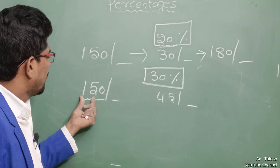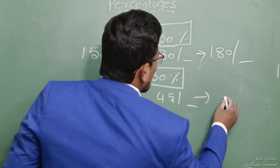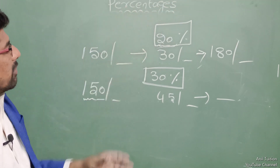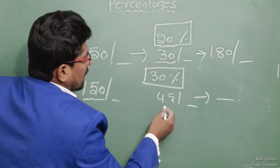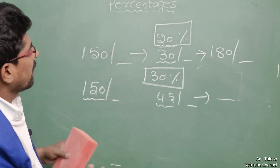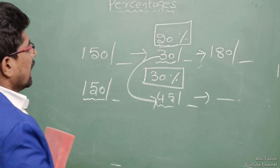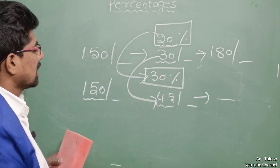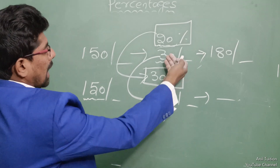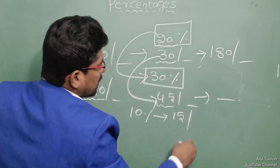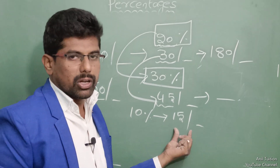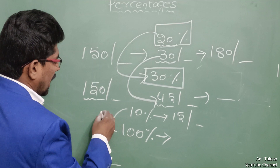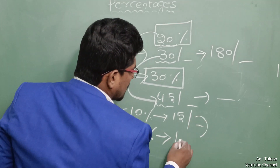This is 20% and this is 30%. When the salary has a 20% increase and then a 30% increase, what is the final salary? First: 10% of 150 is 15, so 20% increase gives 30 rupees added, making 180. Then 30% of 150 is 45 rupees increase. So total increased salary: 150 plus 45 equals 195 rupees.